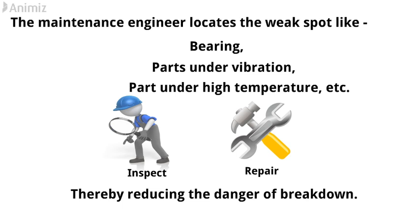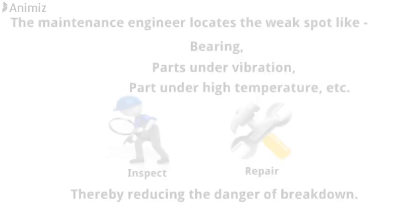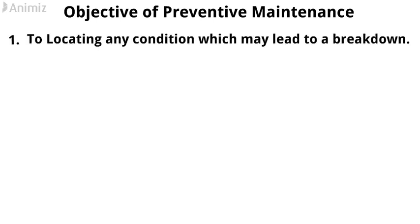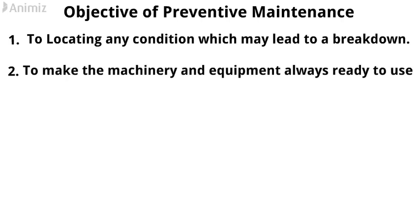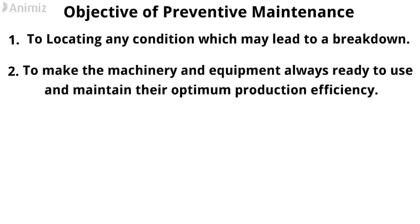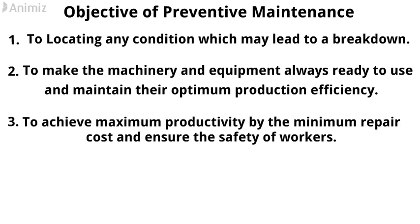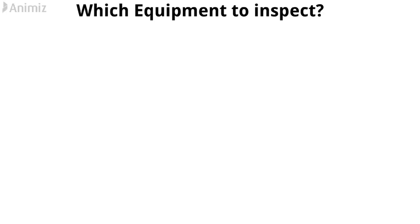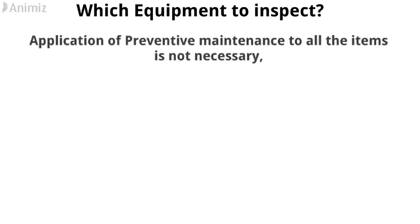Breakdown maintenance has been discussed in another video — check the link in the description. Now, the objectives of preventive maintenance: one, to locate any condition which may lead to a breakdown; two, to make machinery and equipment always ready to use and maintain their optimum production efficiency; three, to achieve maximum productivity by minimum repair cost and ensure the safety of workers.